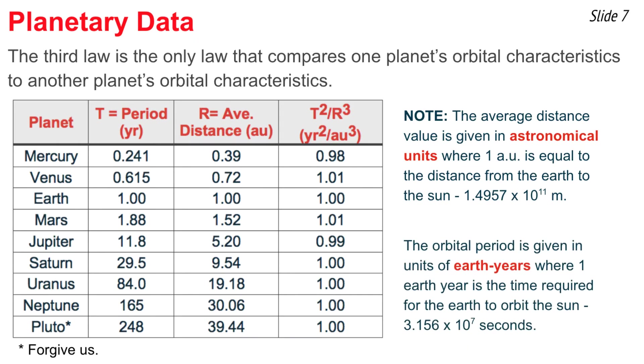And the unit on time is called Earth years. And when we say Earth years, we mean the time it takes in seconds for the Earth to orbit the Sun. And we measure the time of all the other planets' orbital periods in terms of Earth years.